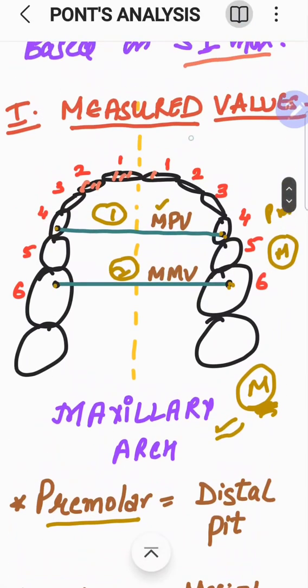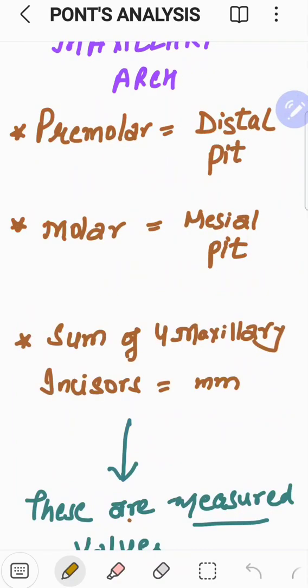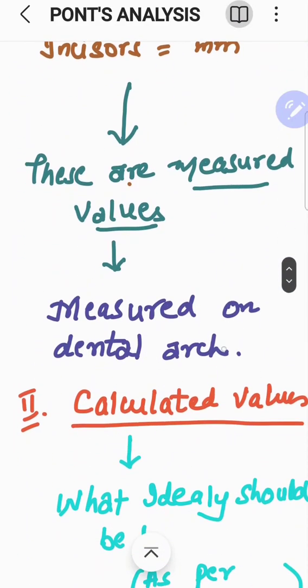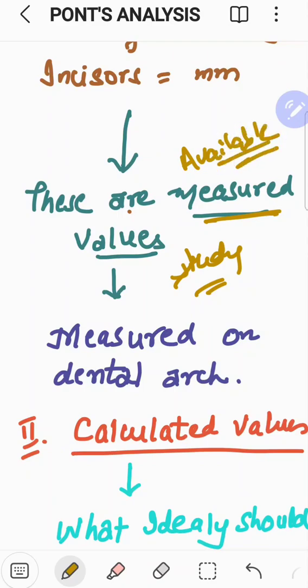The third value which is being taken is the sum of mesial distal width of these four incisors, which are the maxillary incisors. So, these three are the measured values. We measure these values on the study cast, the models which we prepare from the patient. From those models, these values are measured. It means that is something which is made available to us in the patient's oral cavity. What actually is there.